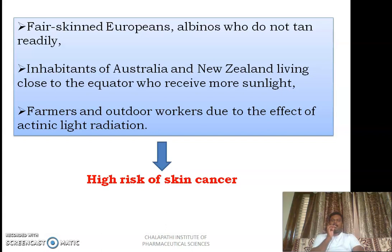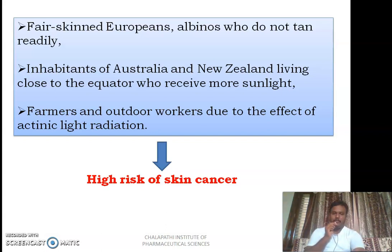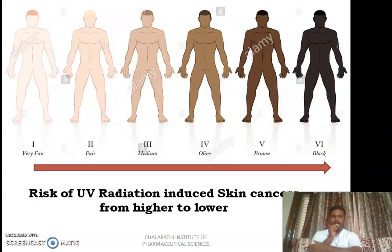More sunlight means more UV radiation, so those people will be at great risk of developing skin cancers. Farmers as well as outdoor workers, due to the effect of actinic light radiation, will also be at great risk in the development of cancer.